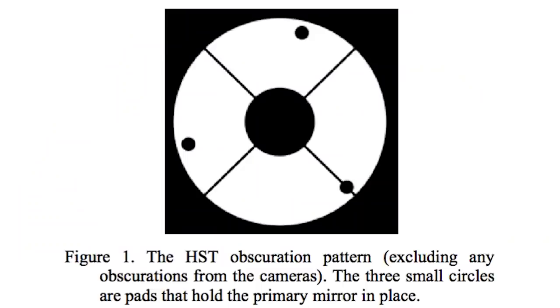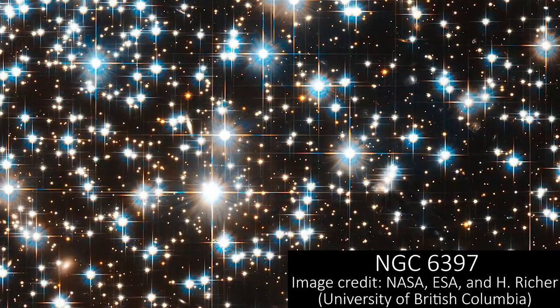Struts are also the cause of spikes in Hubble images. That telescope has four struts holding its secondary mirror in place, and hence we see the famous four-pointed stars in all of Hubble's images.